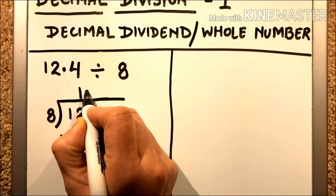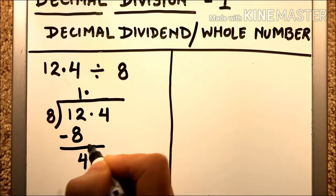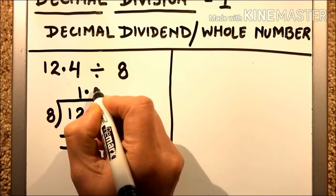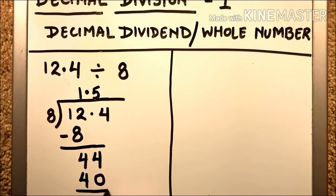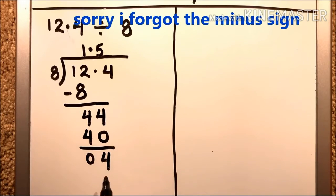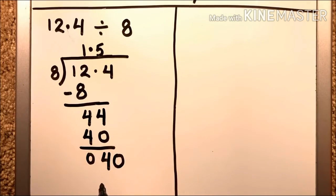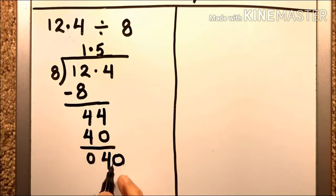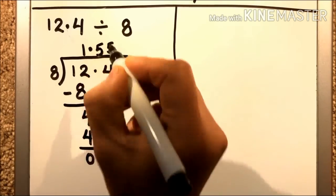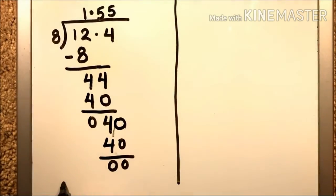Now bring down the next digit, which is 4, making 44. We put the decimal above in the quotient. 8 fives are 40. Subtract: 44 minus 40, remainder 4. Bring down a zero — 40. 8 fives are 40. Subtract: 40 minus 40, remainder 0. So the quotient we get is 1.55.